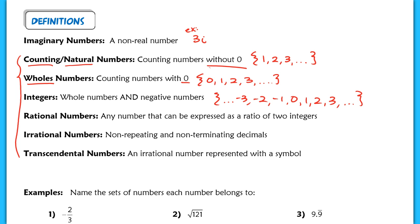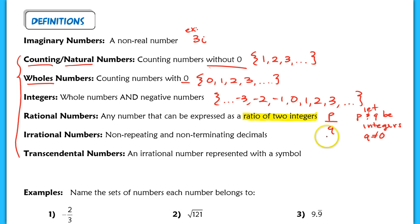A rational number is any number that can be expressed as a ratio of two integers. A formal example would be p over q, where both p and q are integers and q is not equal to 0, because if q were 0 we'd be dividing by zero. For example, 3/5 or even 0.4 — both are rational numbers. Even the number 2 can be written as 2 over 1. These are all examples of rational numbers.